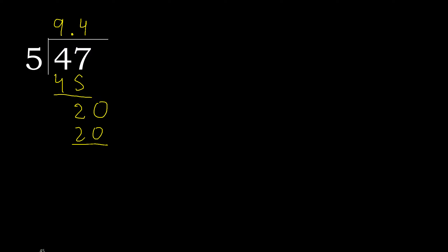20 is not greater. 20 minus 20 is 0. Therefore finish it. 47 divided by 5 is 9.4.